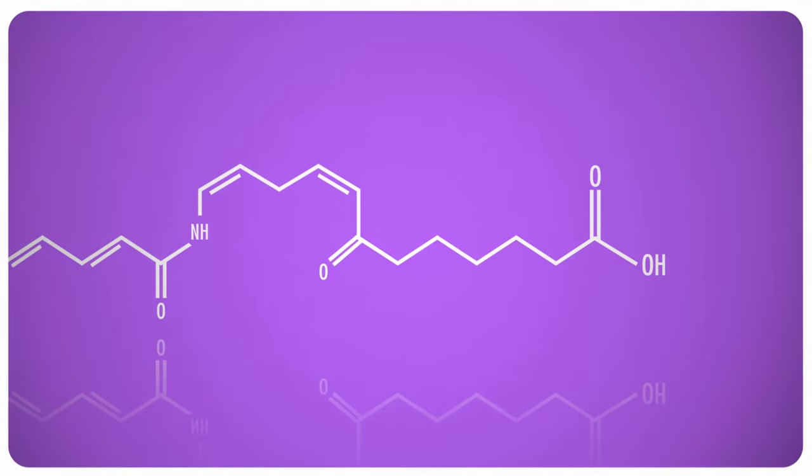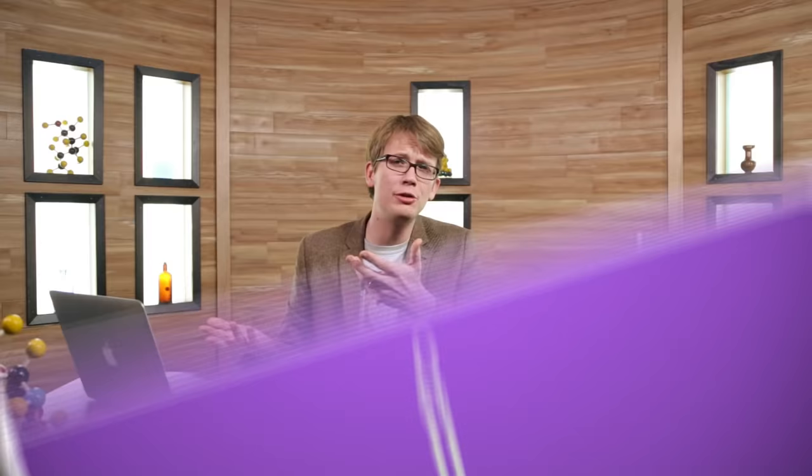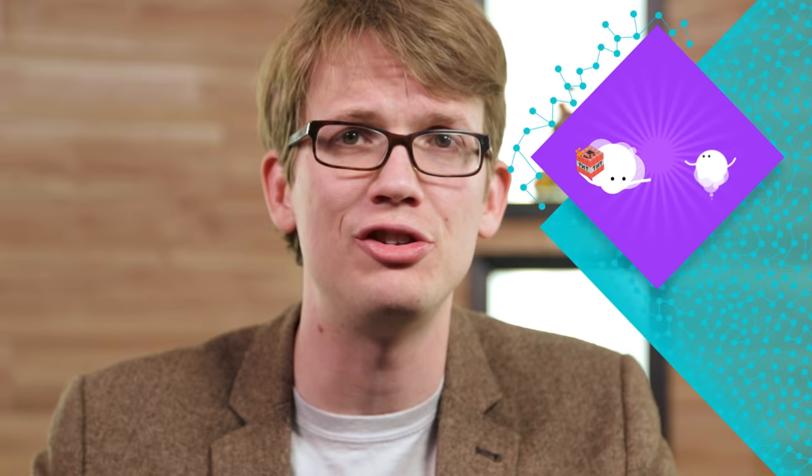When we talk about functional groups, we get so focused on those small areas of the molecule that the rest of the molecule doesn't actually matter that much. So we use R to represent the rest. R just represents any fragment of organic molecule that we're not super concerned with at the moment. We also sometimes call the area of unconcern the R group, as opposed to the functional group where the business is getting done.